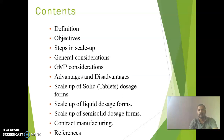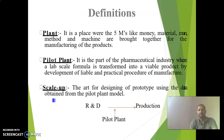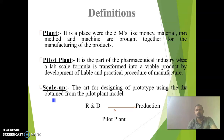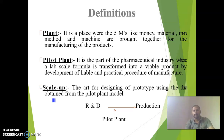First, the definition of a plant: it is the place where the five M's — money, material, man, method, and machine — are brought together for the manufacturing of products. Proper utilization of these five M's will yield a good quality product.